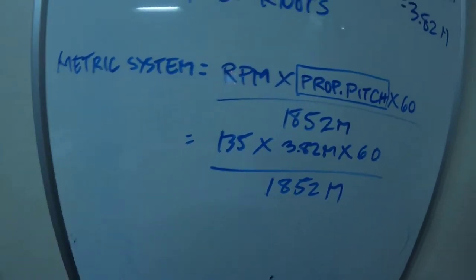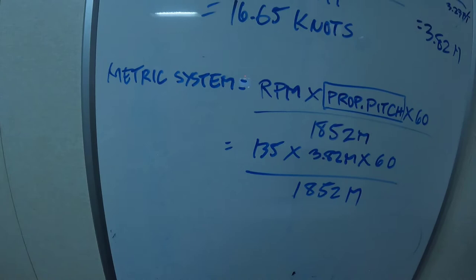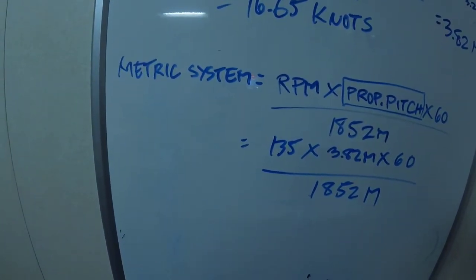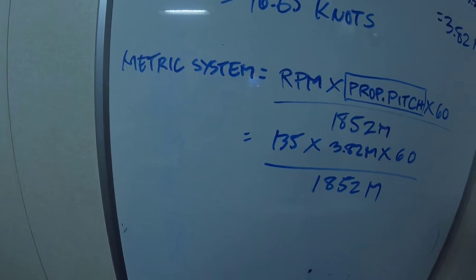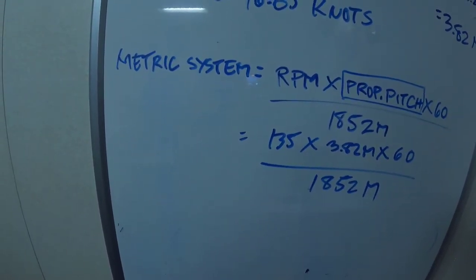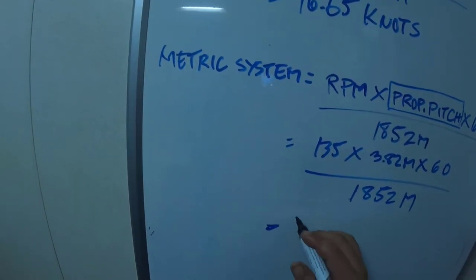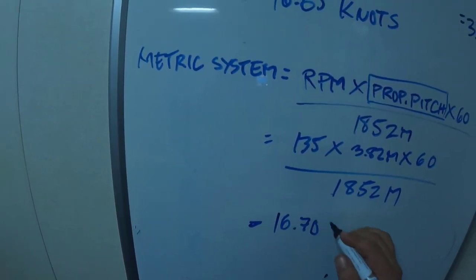So now the answer is 135 times 3.82 times 60 divided by 1852, which gives us 16.70 knots.